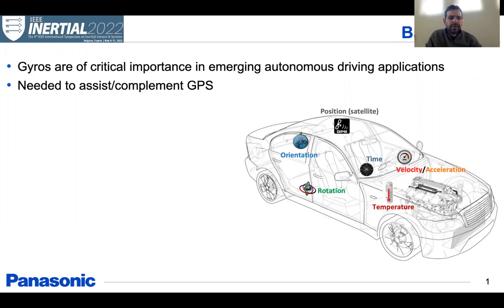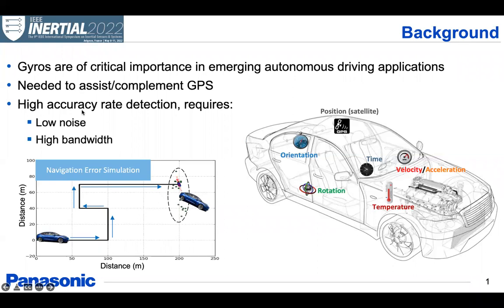MEMS inertial sensors continue to play a critical role in many emerging spaces. In particular, MEMS gyroscopes are expected to be of great importance in the automotive space for high-end applications such as driver assistance systems and autonomous vehicles. In these spaces, they're expected to help complement and assist GPS. For this reason, MEMS gyros are not only required to have low noise, but also very high bandwidth so that they can detect very precise rotation rates at relatively large speeds.